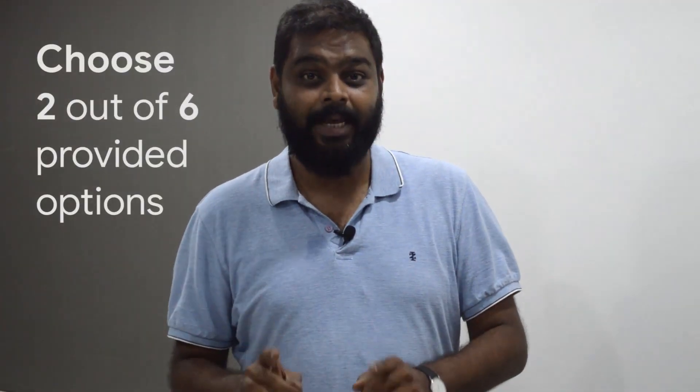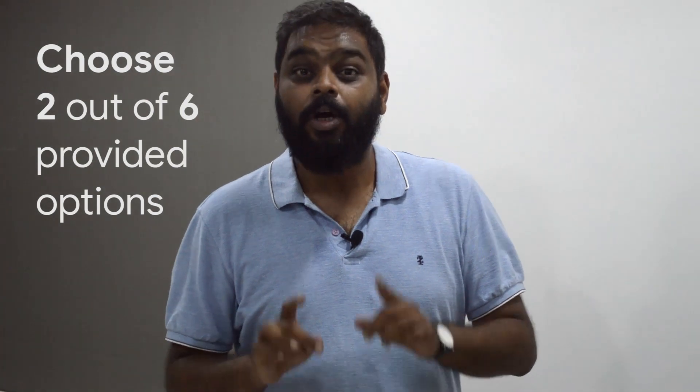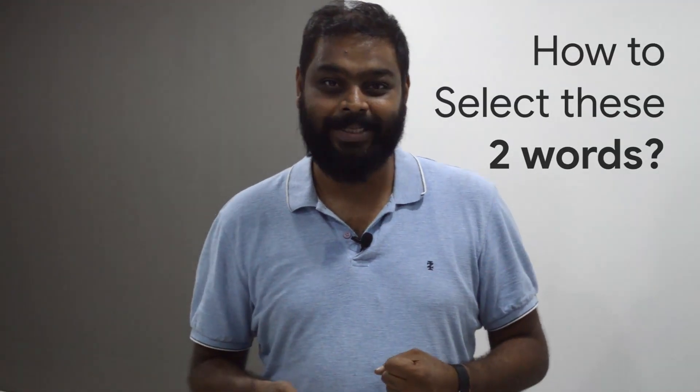In some cases you might see two and three blanks as well. Sentence equivalence is very close to the one blank text completion questions where yes, one of the words or phrases is omitted and you need to fill it in. But in your single blank text completions you are generally given five options and you need to choose one of them, whereas for sentence equivalence you are given six options and you need to choose two of them.